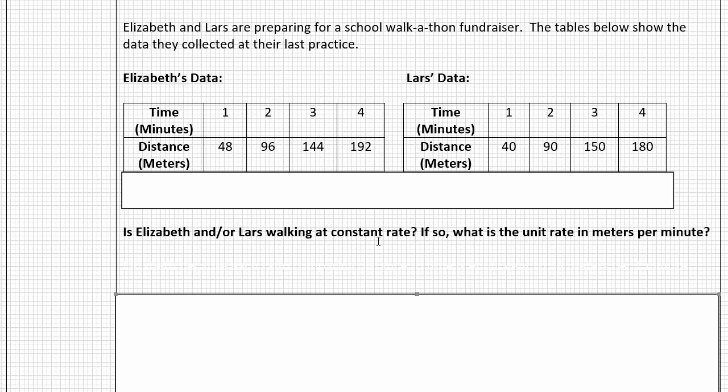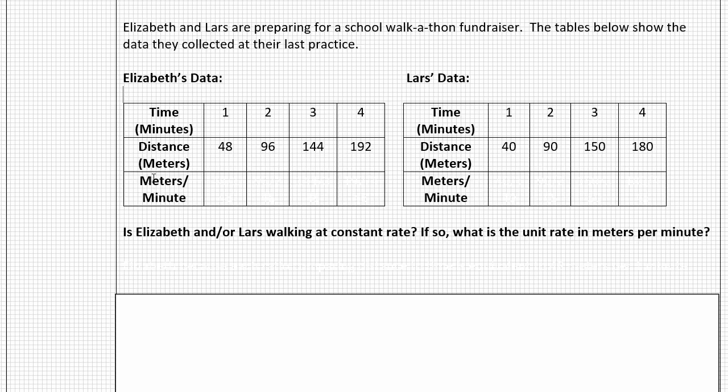Is Elizabeth and or Lars walking at a constant rate? This will be talking about the first criteria of a proportional relationship. And if so, what is the unit rate in meters per minute? Did you spot that word again? Here's that key word we've been focusing on: per. It helps us set up our ratios, telling us that the variable listed first, meters, will be our numerator, and the variable listed after per, minutes, is going to be our denominator. To answer this question, let's add a row to our table to represent those ratios.